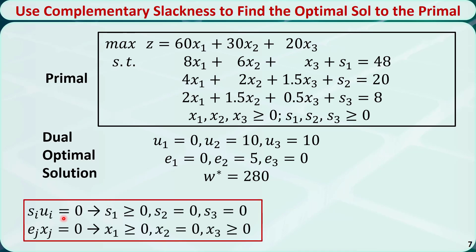S1 · u1 = 0: since u1 is already 0, we cannot determine the value of S1 — we only know S1 ≥ 0. S2 · u2 = 0: because u2 = 10, S2 must equal 0. S3 · u3 = 0: because u3 = 10, S3 must equal 0. E1 · x1 = 0: since E1 is already 0, we cannot determine the value of x1.